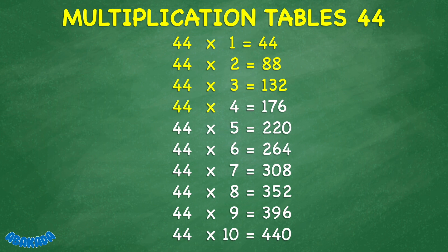44 times 4 equals 176. 44 times 5 equals 220. 44 times 6 equals 264. 44 times 7 equals 308. 44 times 8 equals 352. 44 times 9 equals 396. 44 times 10 equals 440.